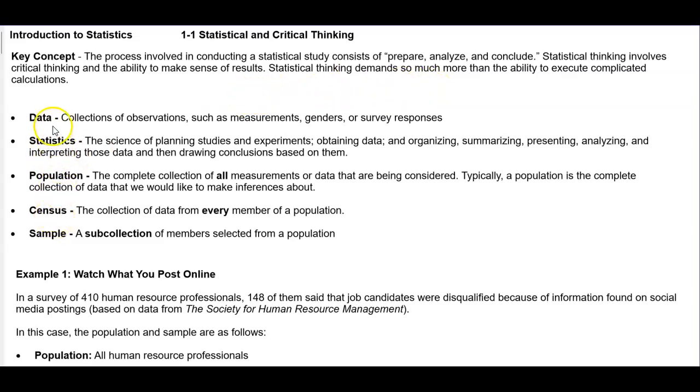Here are some definitions. The first definition is data. We need data. In order to get data, it's a collection of observations such as measurements, genders, or survey responses. Statistics is the science of planning studies and experiments, obtaining data, organizing, summarizing, presenting, analyzing, and interpreting those data, and then drawing conclusions based on them.